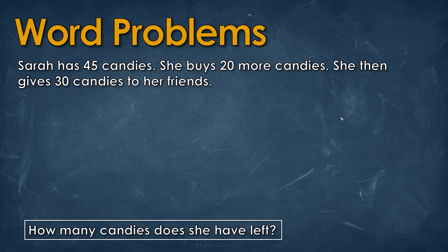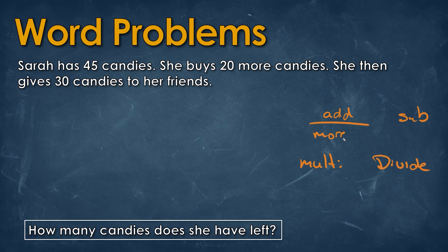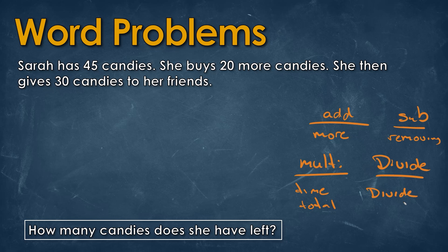So again, we have the question but we don't know whether we need to add, subtract, multiply, or divide. We need to find those keywords to help us understand. Add would be something like 'more.' Subtract would be something where she talks about removing, or the word 'left.' Multiply would be something like 'times' or 'total.' Divide would be something like 'divide.' Another word too is 'left' — removing or left for subtracting.